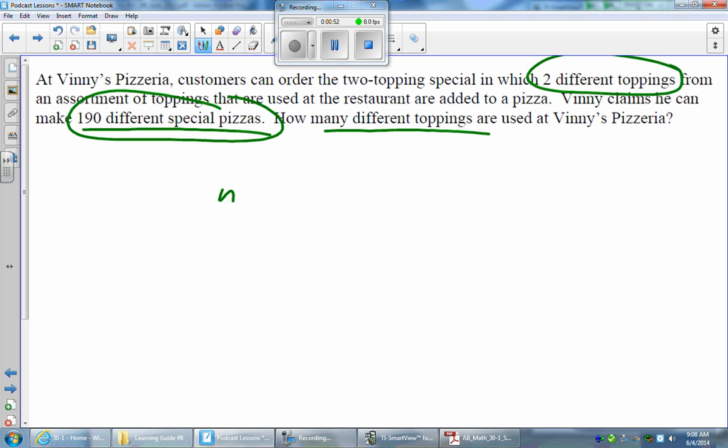So the formula for a combination problem is N choose R equals N factorial over N minus R factorial over R factorial. Now, N choose R, we are choosing two toppings from a certain number, and that's what we're trying to find here. So N choose 2 toppings equals N factorial over N minus 2 factorial over 2 factorial.